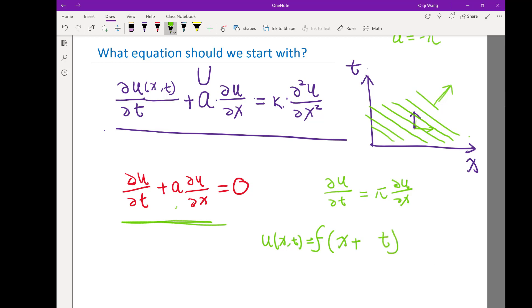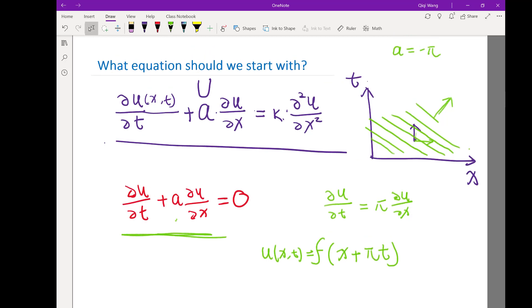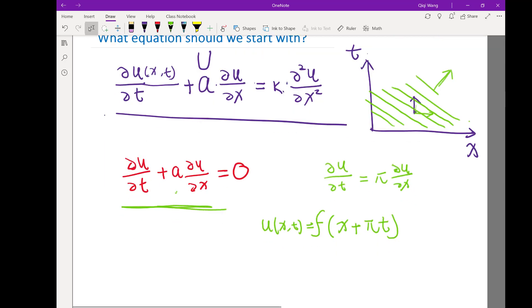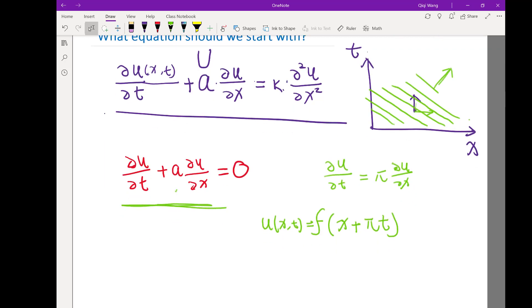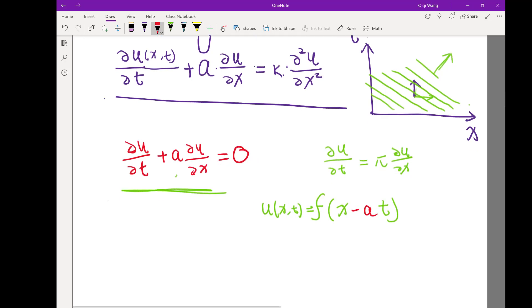In this case, u(x,t) is actually a function of x plus something times t. Guess what that something is? Negative π, or π, or minus a. In this case, π equals minus a. So in general it could be minus a. Let me write it more generally: this case is actually x minus a times t.